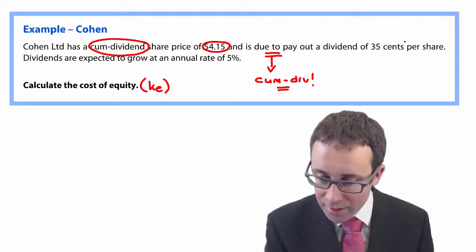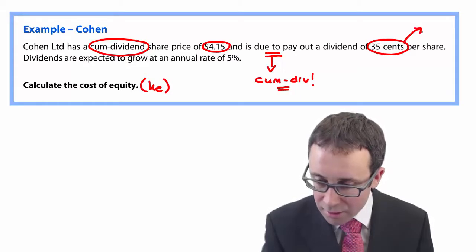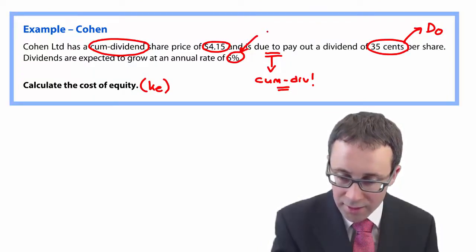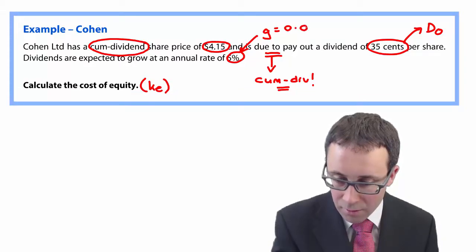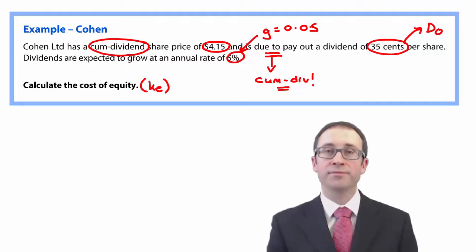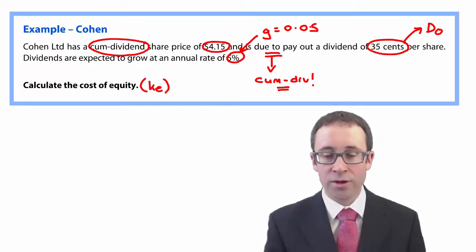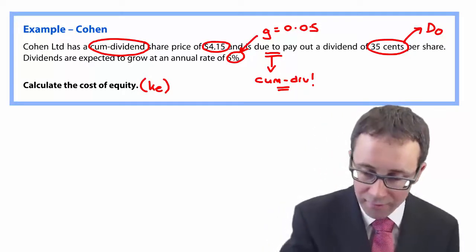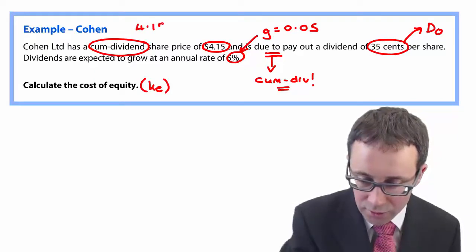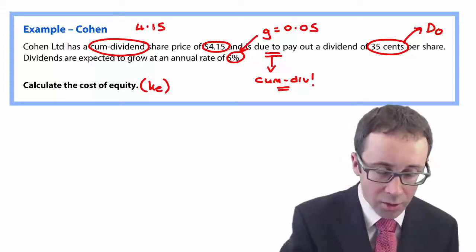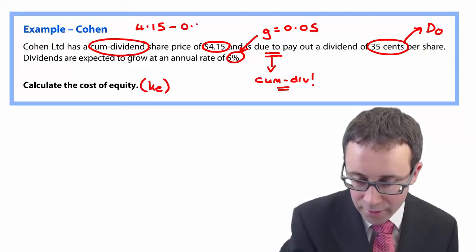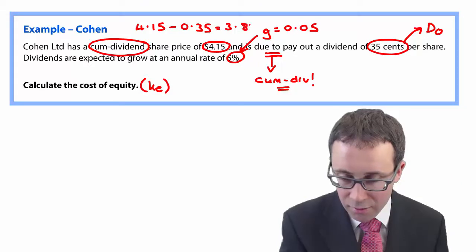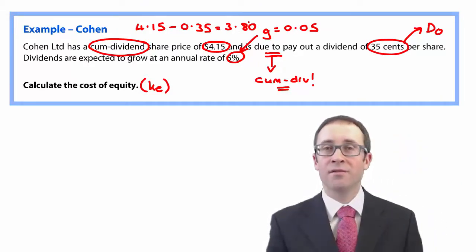We have a dividend of $0.35 per share — that is D0. And we have a growth rate of 5%, which is 0.05. The most important thing is to convert that $4.15 cum-div to the ex-div share price. So you take the $4.15 cum-div price and deduct the dividend of $0.35, which gives you $3.80 as the ex-div share price.